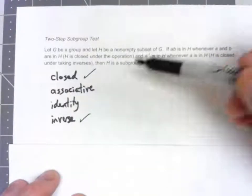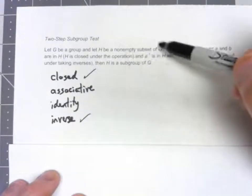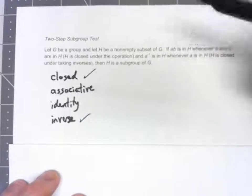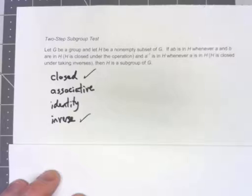We know it has the same binary operation that G has. The operation on G was associative. So, if it works for all the elements of G, it certainly works for a smaller collection of the elements in G. So, it's automatically going to be associative.